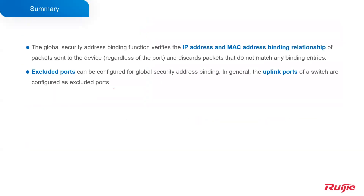In summary: the global security address binding function verifies the IP address and MAC address binding relationship of packets sent to the device, and discards packets that do not match any binding entries. Excluded ports can be configured for global security address binding. In general, the uplink ports of a switch are configured as excluded ports.